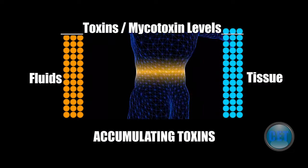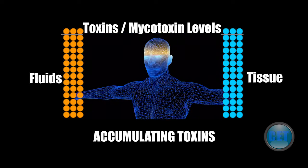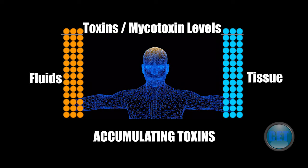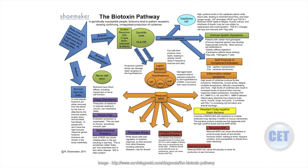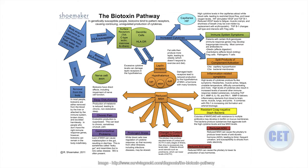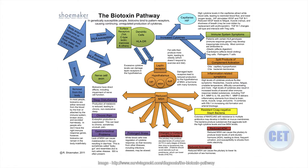As they accumulate in the cells, they reach an equilibrium point in the fluids that are bathing the cells, and basically they're everywhere in our body. This is the problem. If you are missing significant segments of the detox array and you accumulate these poisons, they begin to have adverse effects. Those adverse effects occur in what we refer to as the biotoxin pathway. If you can't clear the poisons, the poisons begin to cause multi-organ system illnesses.